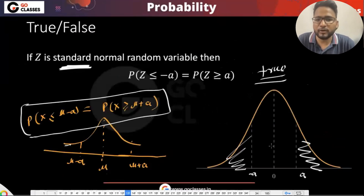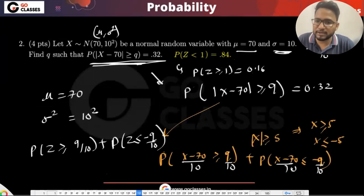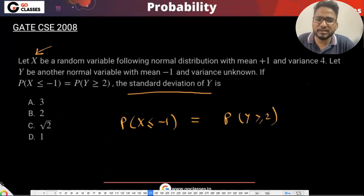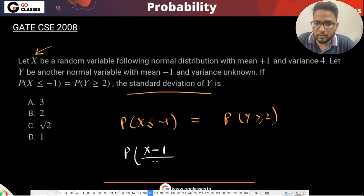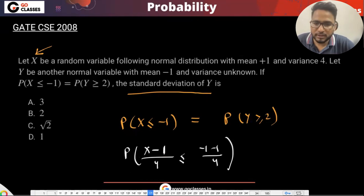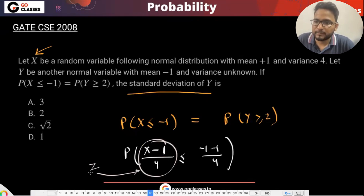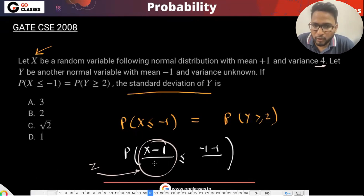We convert everything to Z. So for X: (X − 1) / 2 ≤ (−1 − 1) / 2, which gives Z ≤ −1. Note: we divide by sigma (the standard deviation), not the variance. Four is the variance, so sigma is two — don't make the mistake of dividing by the variance instead of the standard deviation.